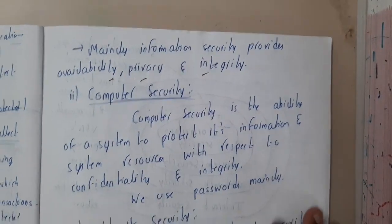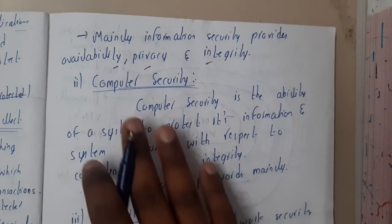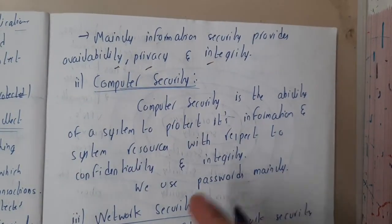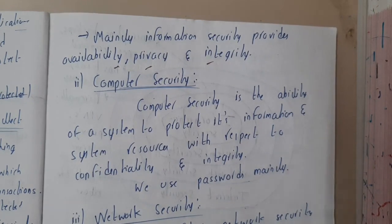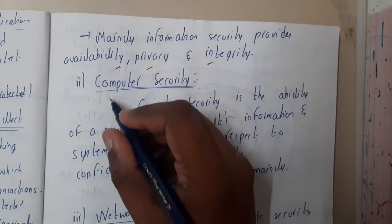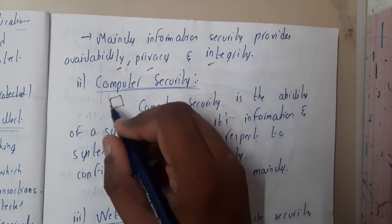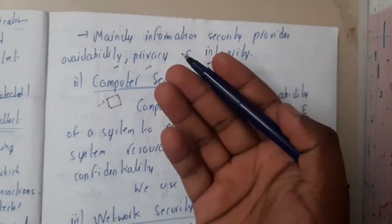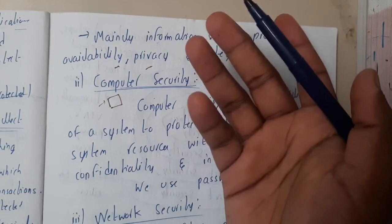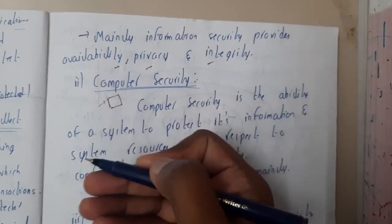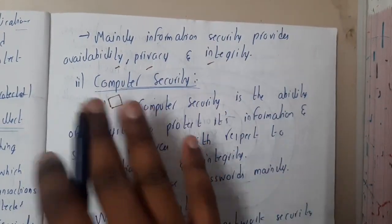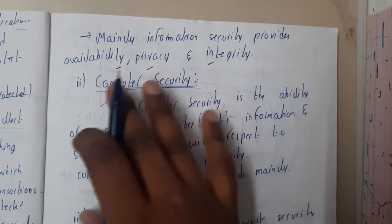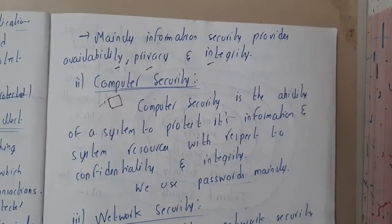The second type is computer security. Whenever you turn on your computer, even in your laboratories, they keep some password protection — everyone knows the password is your college name or something like 'student123'. They keep it because they want to keep their systems secured from unknown people.